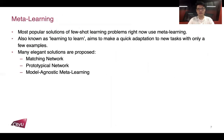Right now, the most popular solutions to few-shot learning problems use meta-learning. Meta-learning is also known as learning to learn; it aims to make a quick adaptation to new tasks with only a few examples. There are many elegant solutions in meta-learning, such as matching network, prototypical network, and model-agnostic meta-learning, also known as MAML. In our approach, we take model-agnostic meta-learning to solve our problem.